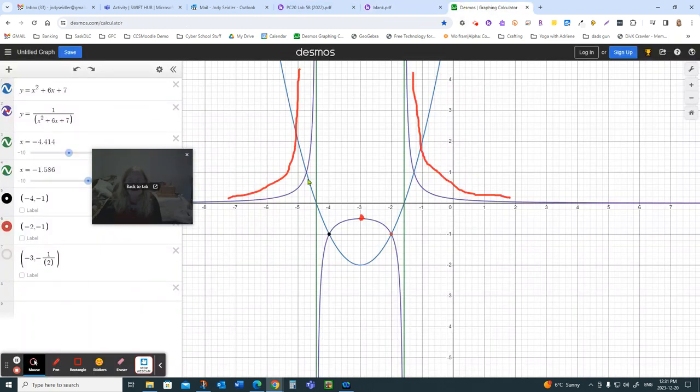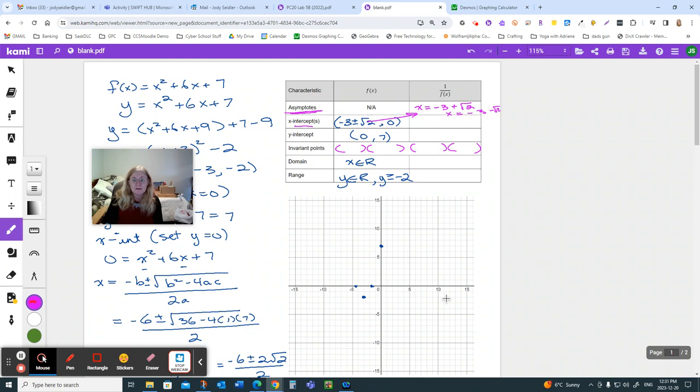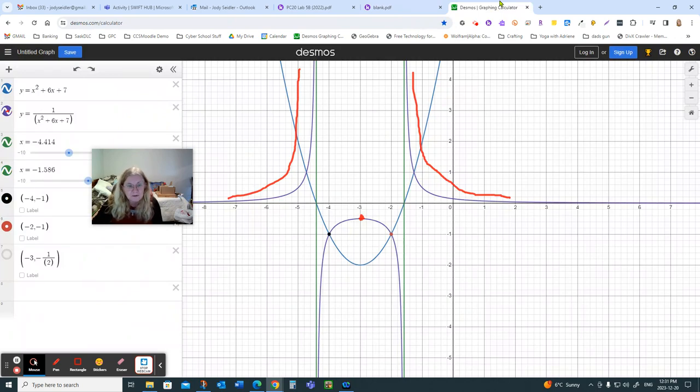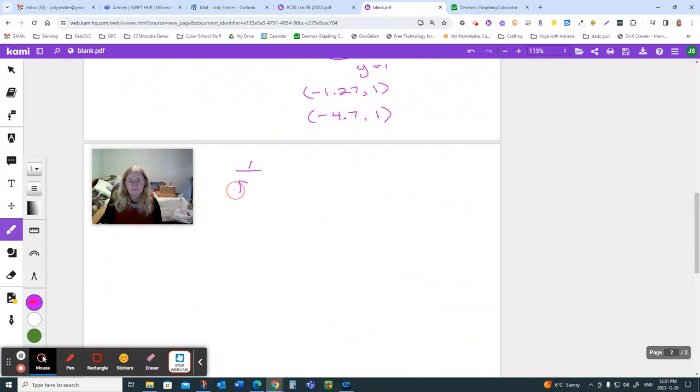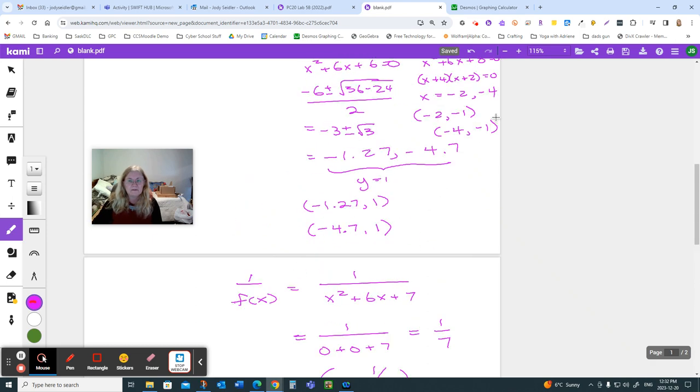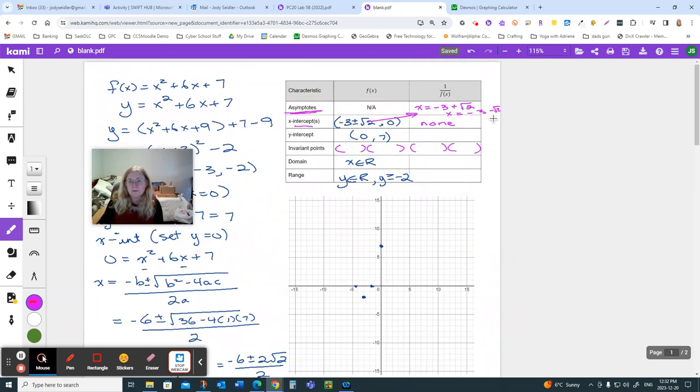X-intercepts. Our new reciprocal function never touches that x-axis. Some will. This one does not. There are none. Y-intercept. And again, how would you find that? Put zero in for x, right? I can go all the way down here. Our reciprocal function is really 1 over. So, to find my y-intercept, if I put zero in for x, I find out that this hits the y-axis at 0, 1/7, which we'll go look at the graph in a second, but I'm going to put that in here so I don't forget. And now have a look at your two y-intercepts. There's your reciprocal, right?